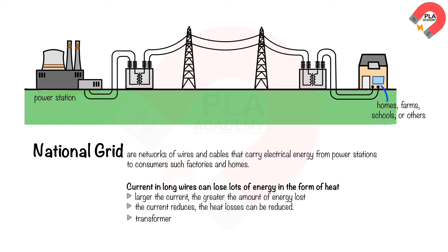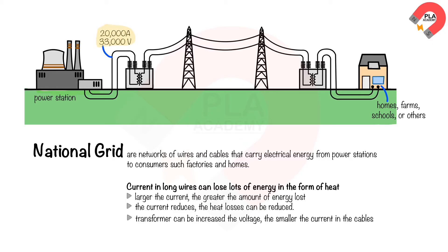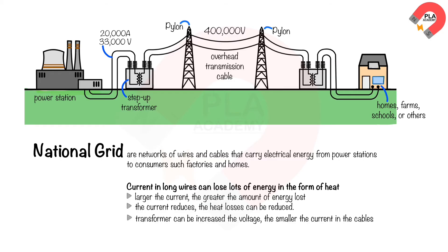Transformers are used in national grids so that electricity is transmitted as low currents and at high voltages. Typically, a large power station produces a current of 20,000 amperes at a voltage of 33,000 volts. The high current is fed to a step-up transformer, which greatly decreases the size of the currents and increases the size of the voltages to approximately 400,000 volts. High voltages like these can be extremely dangerous, so the cables are supported high above the ground on pylons. As the cables enter towns and cities, they are buried underground.